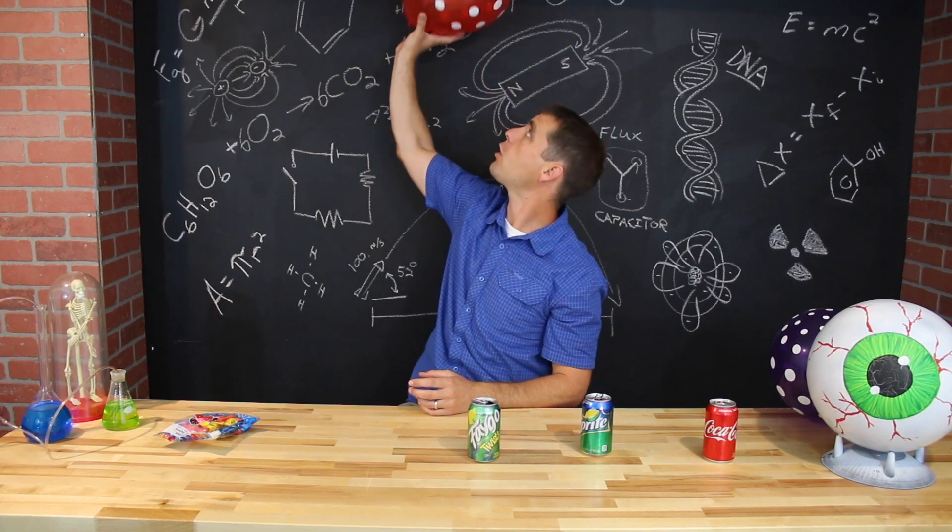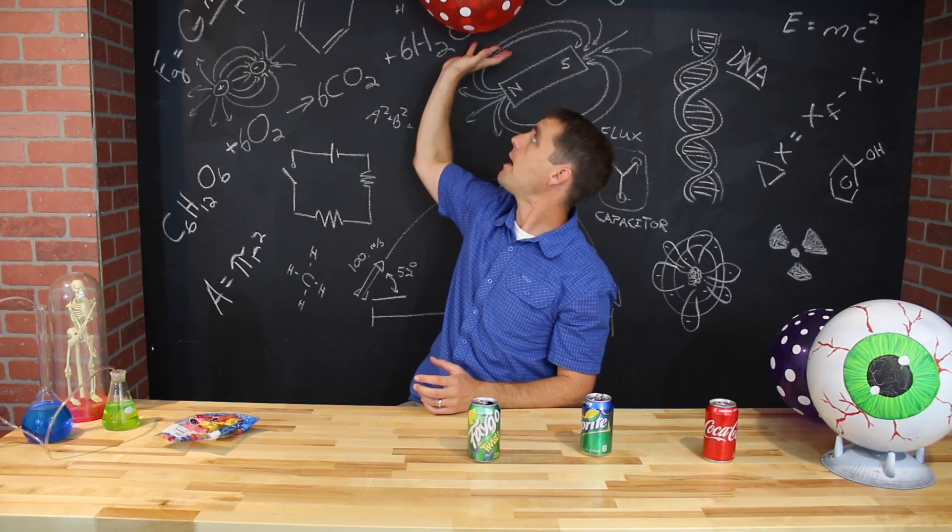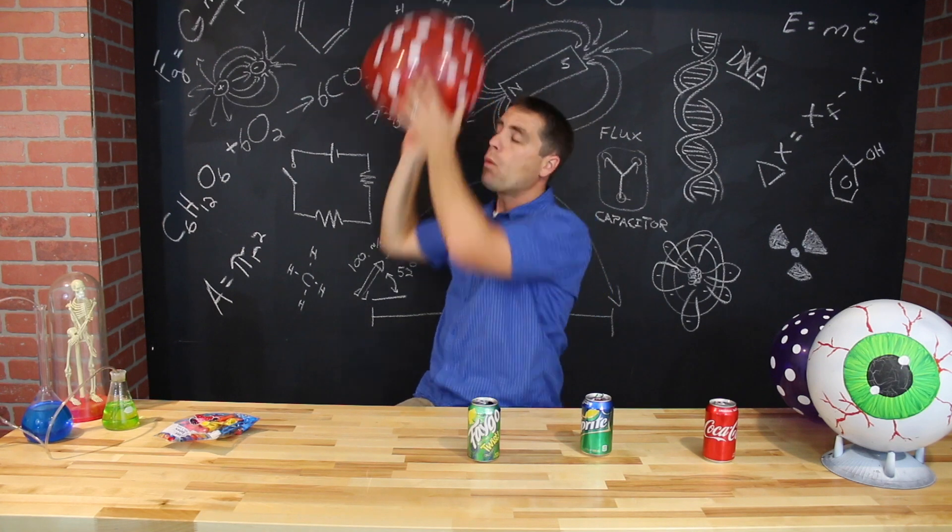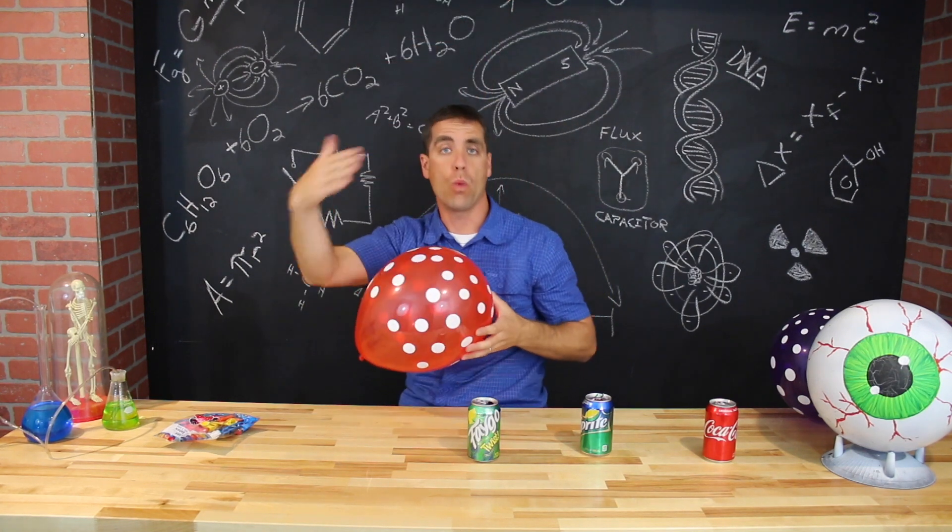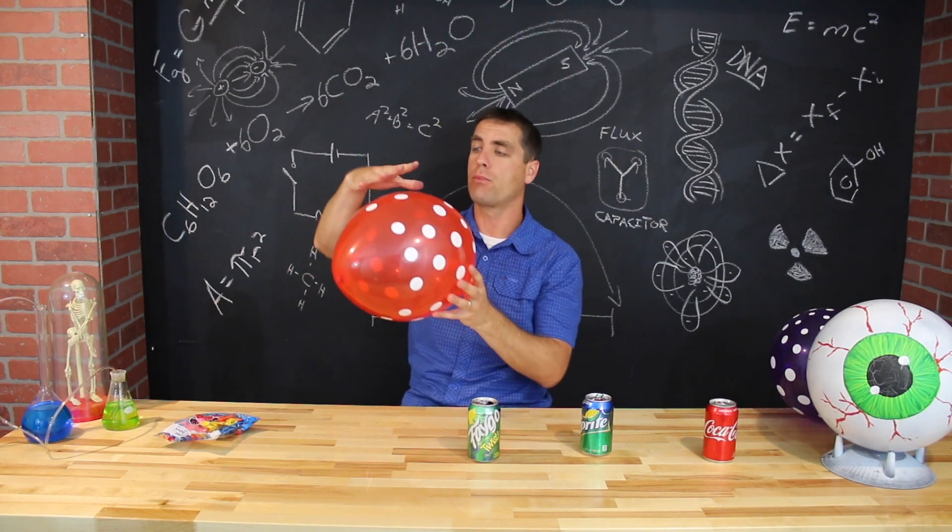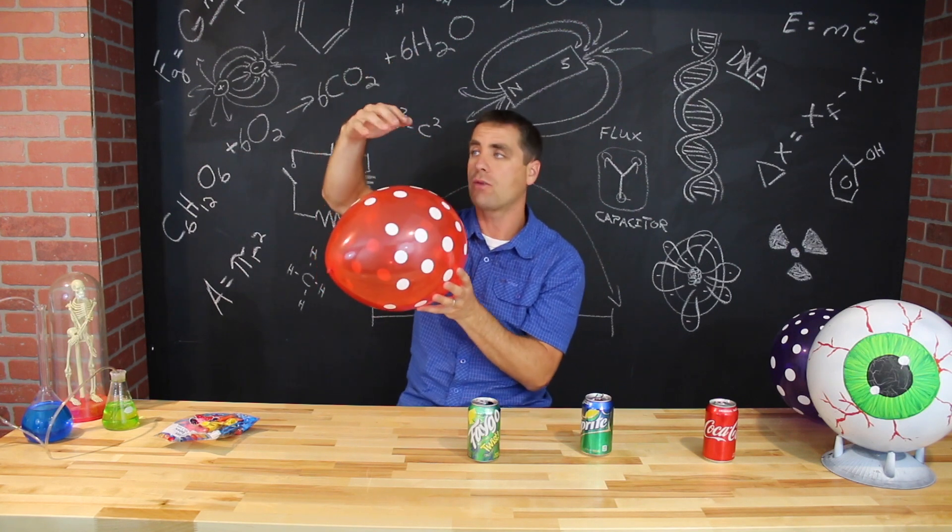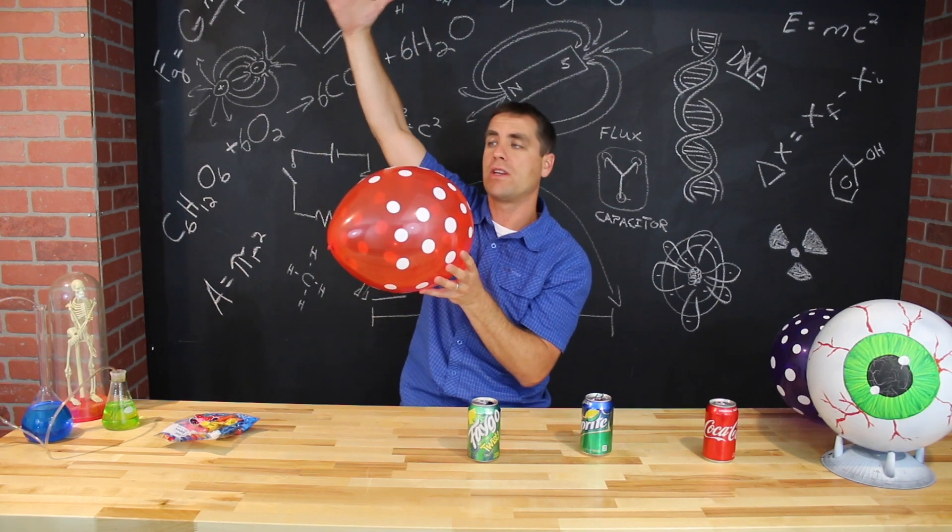If I bring that balloon, as we did before, bring it near a wall, what's going to happen is it's going to stick to that wall. Because the wall was neutral, but as we bring this negative charge towards it, the electrons will move away, which leaves positive charges right near the surface, right near the wall.